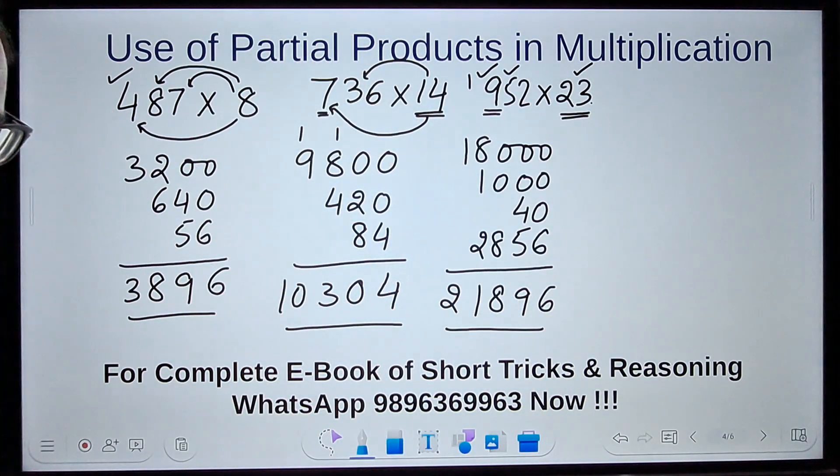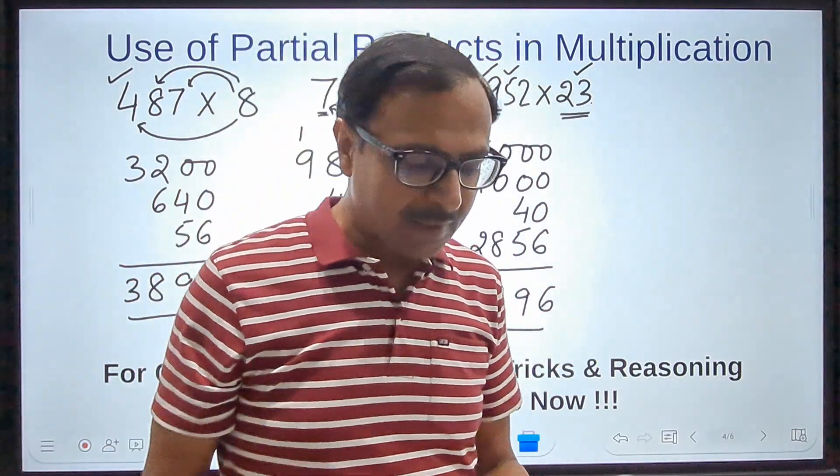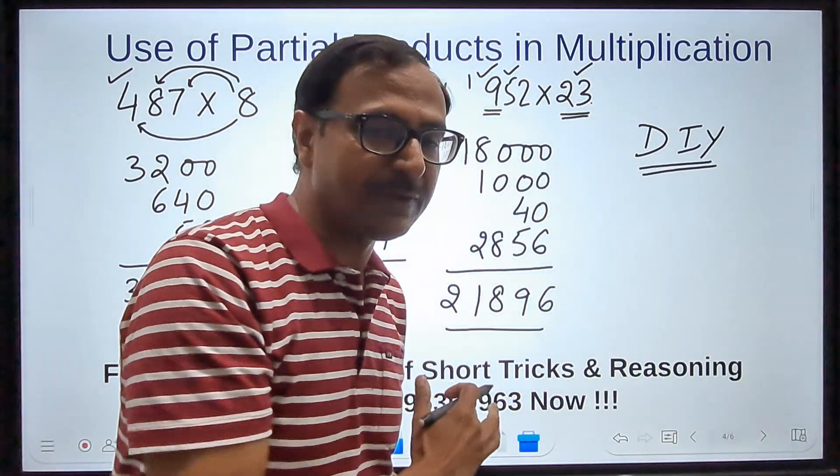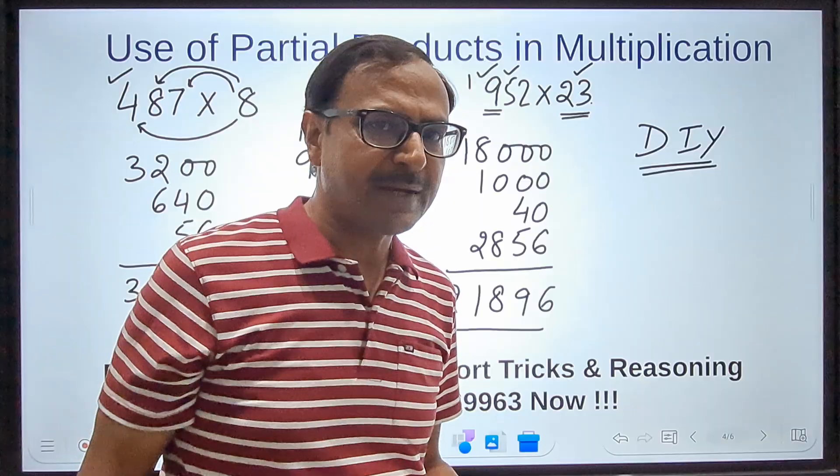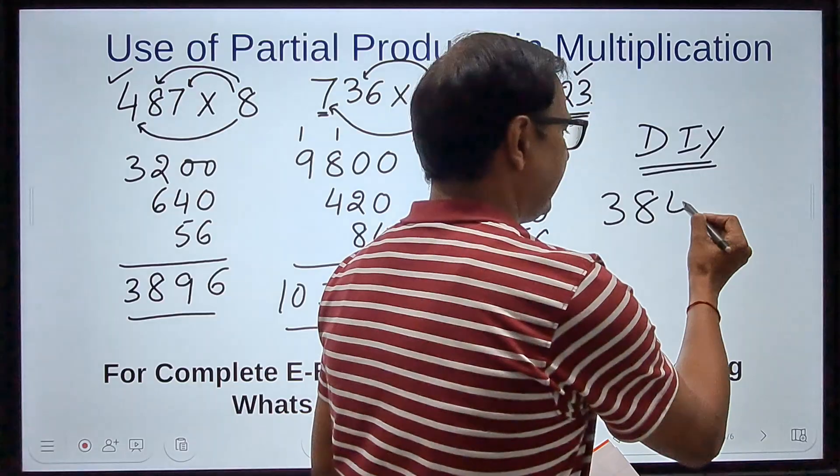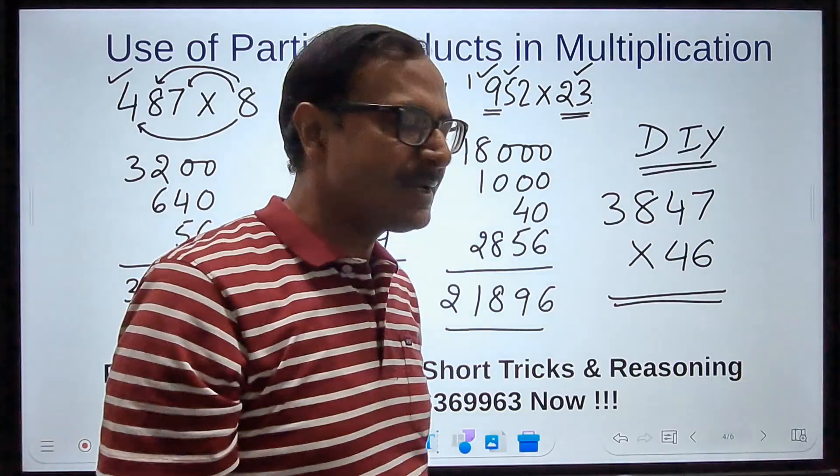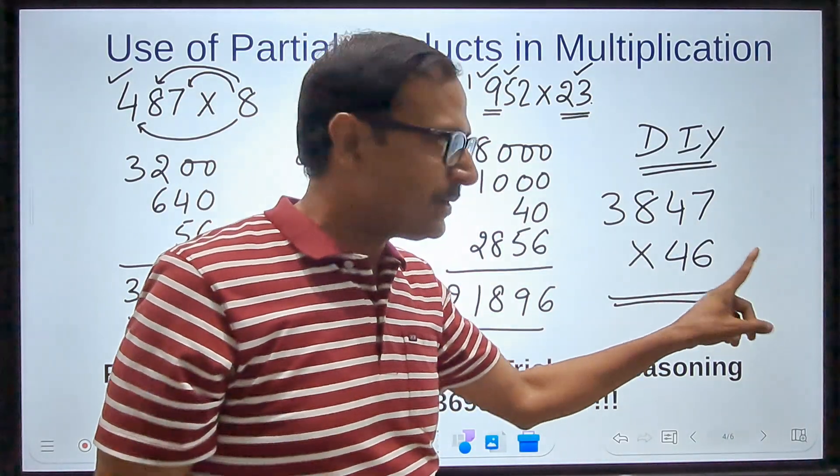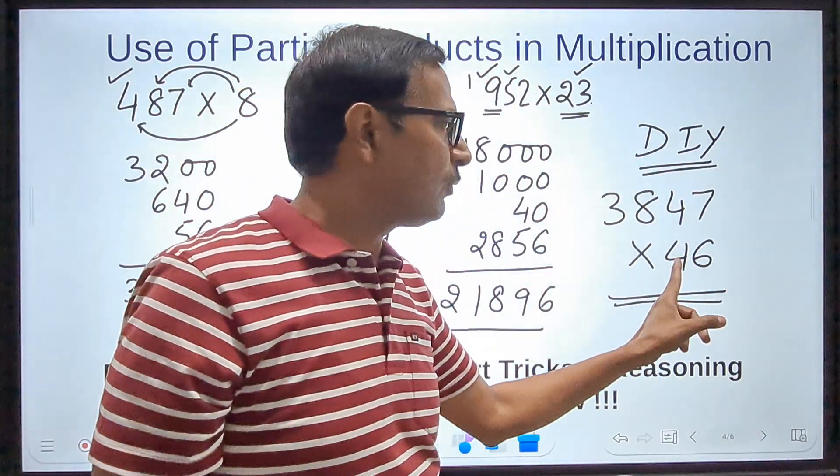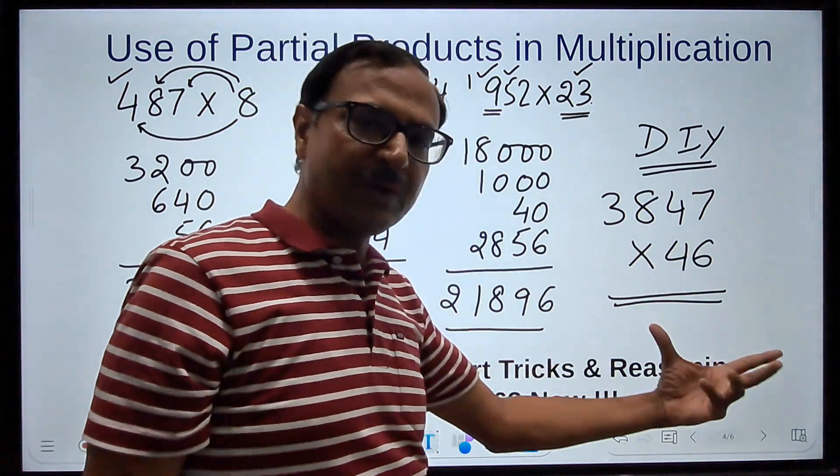Using this method, you can try one example. I'll give you a DIY question—do it yourself question. You can solve that using this method and comment whether you got the answer right and how much time it took: 3847, and I want you to multiply that by a number like 46. The simple hint is you have to consider this as 40 and 6. So 40 times 3 followed by 3 zeros, 40 times 8 followed by 2 zeros, 40 times 4 followed by 1 zero, 40 times 7, and then 6 times this number to be written below that, and then vertical addition to be done.